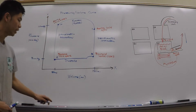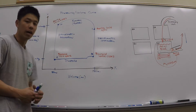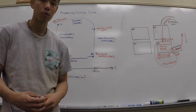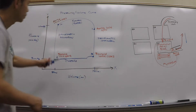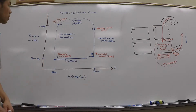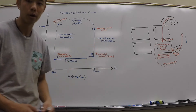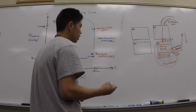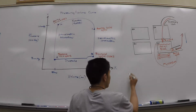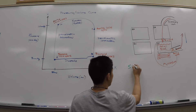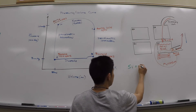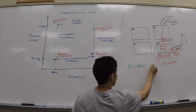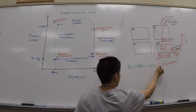How's it going? In this video I'm going to be talking about a couple of equations that are important, related to our pressure-volume curve as well as our four-chambered heart. The first one I'm going to start with is stroke volume. The equation for stroke volume is equal to our end-diastolic volume minus our end-systolic volume.